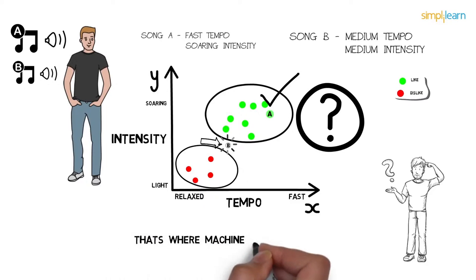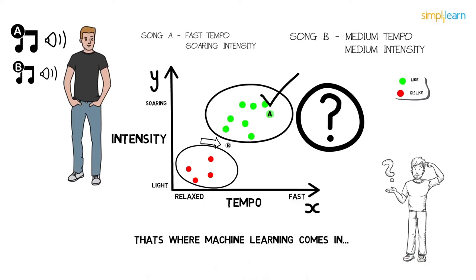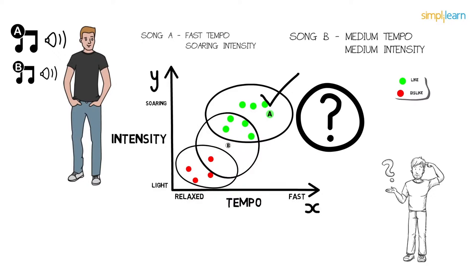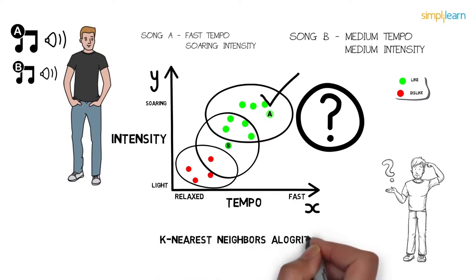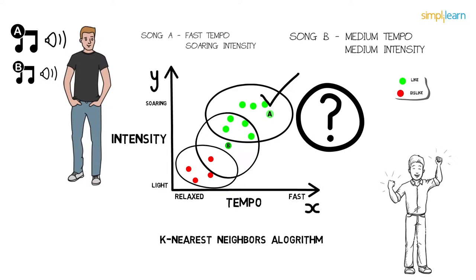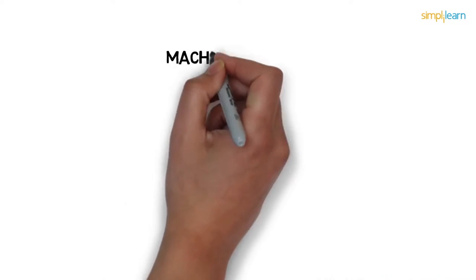That's where machine learning comes in. For Song B, if we draw a circle around it, we see four votes for 'like' and one vote for 'dislike.' Going for the majority, Paul will likely like the song. This is a basic machine learning algorithm called K-Nearest Neighbors. Machine learning learns the data, builds a prediction model, and when new data comes in, it can easily predict. More data means a better model and higher accuracy.